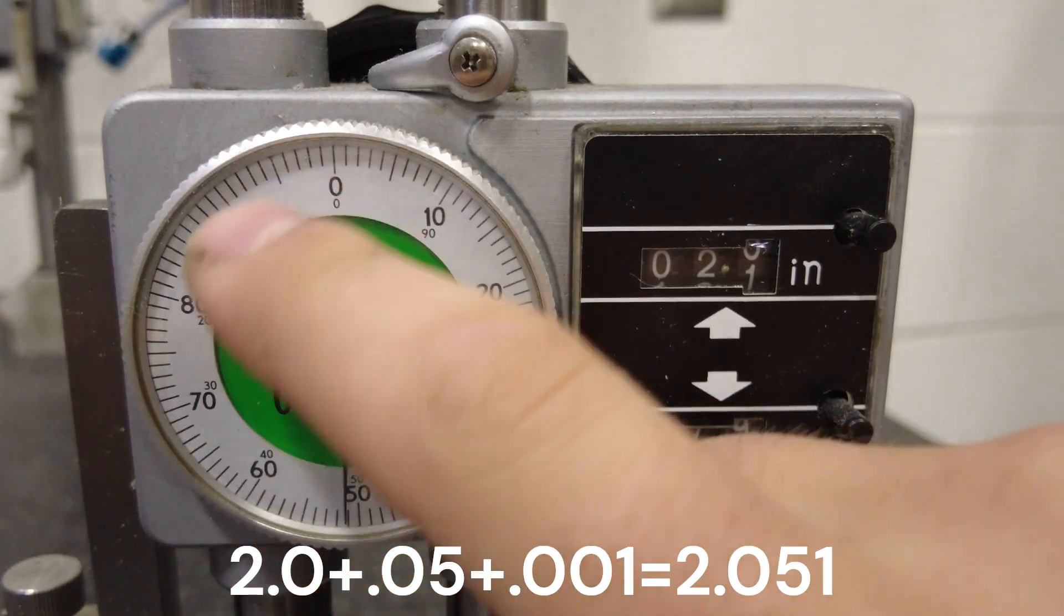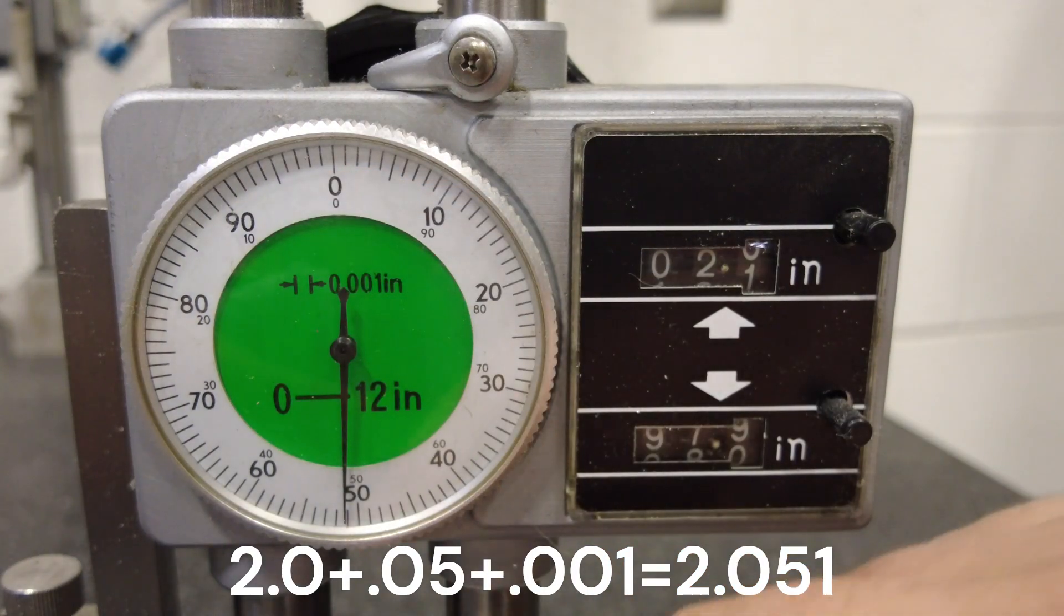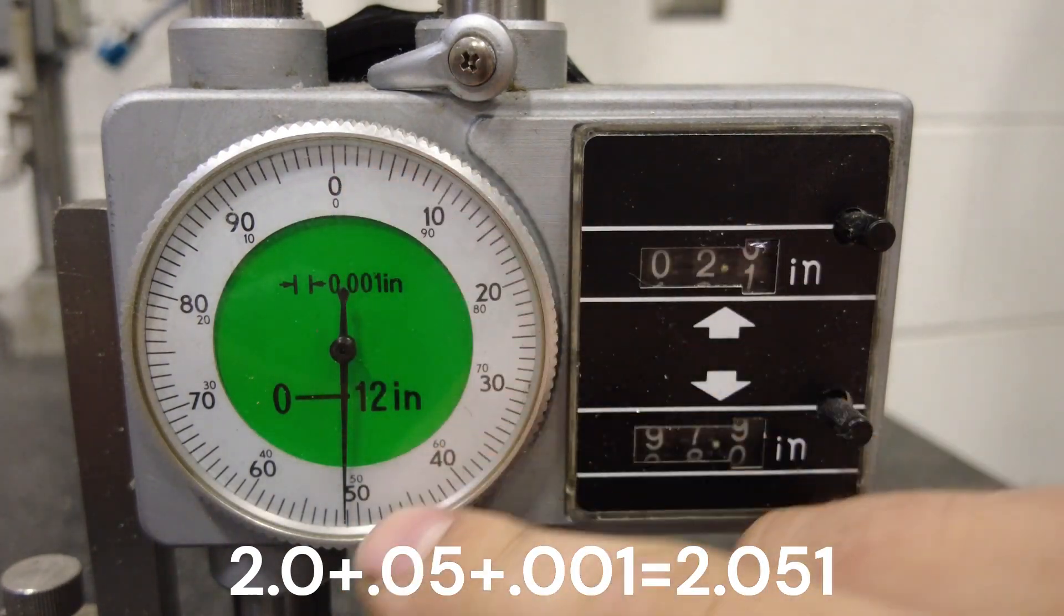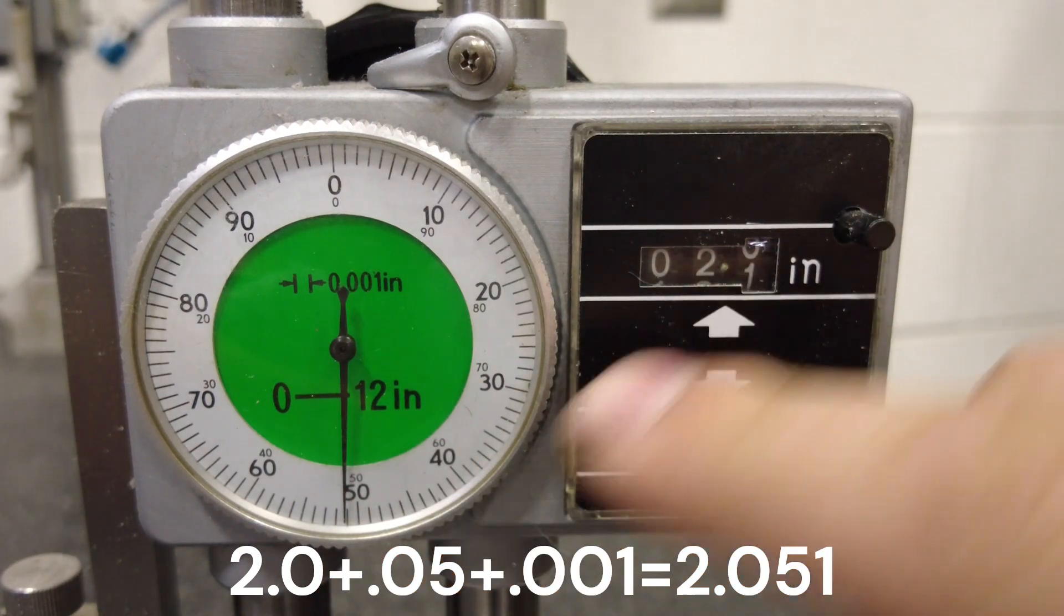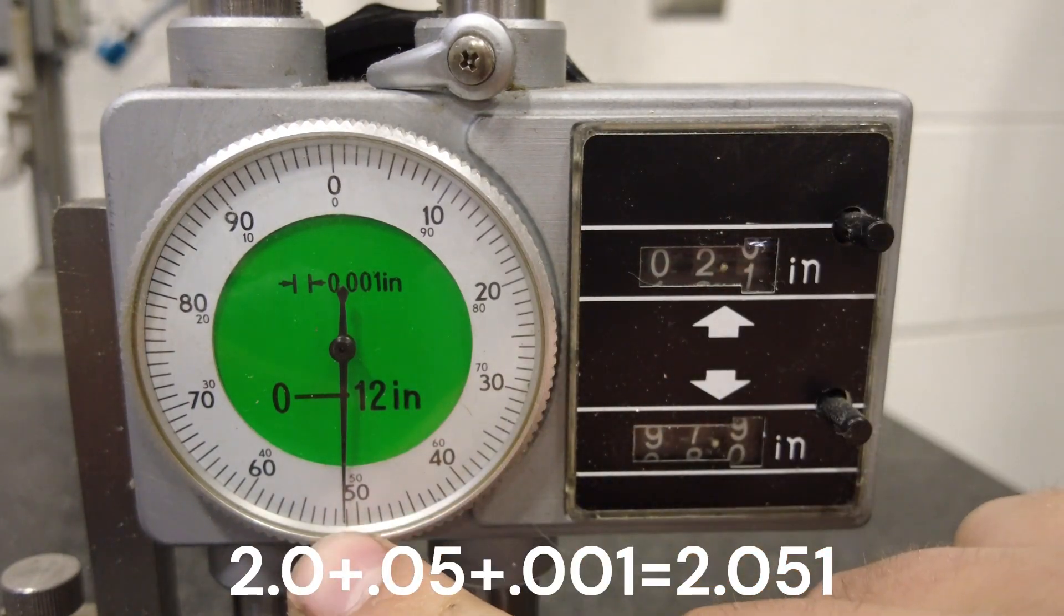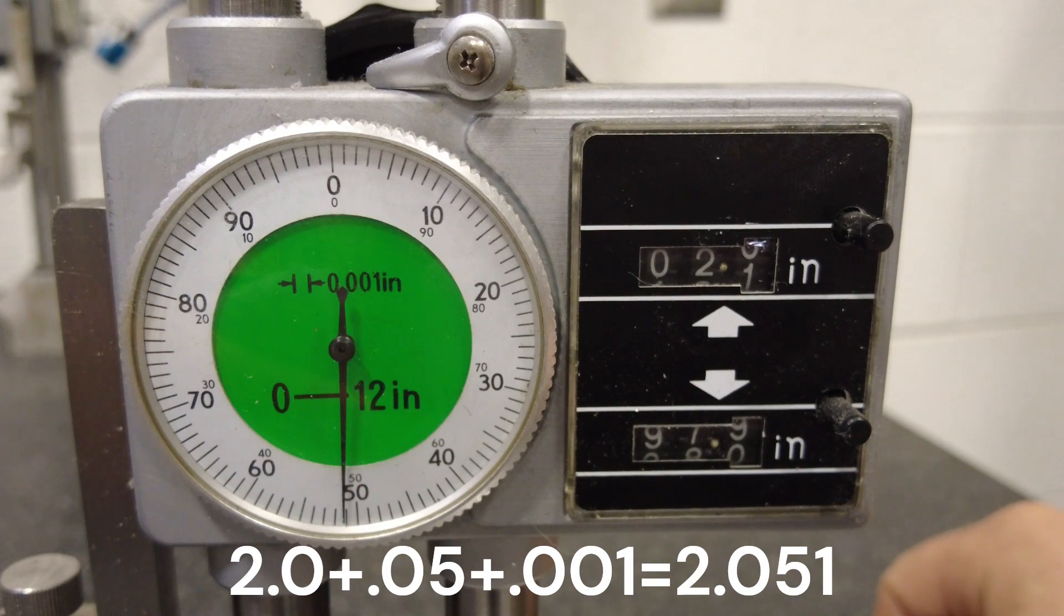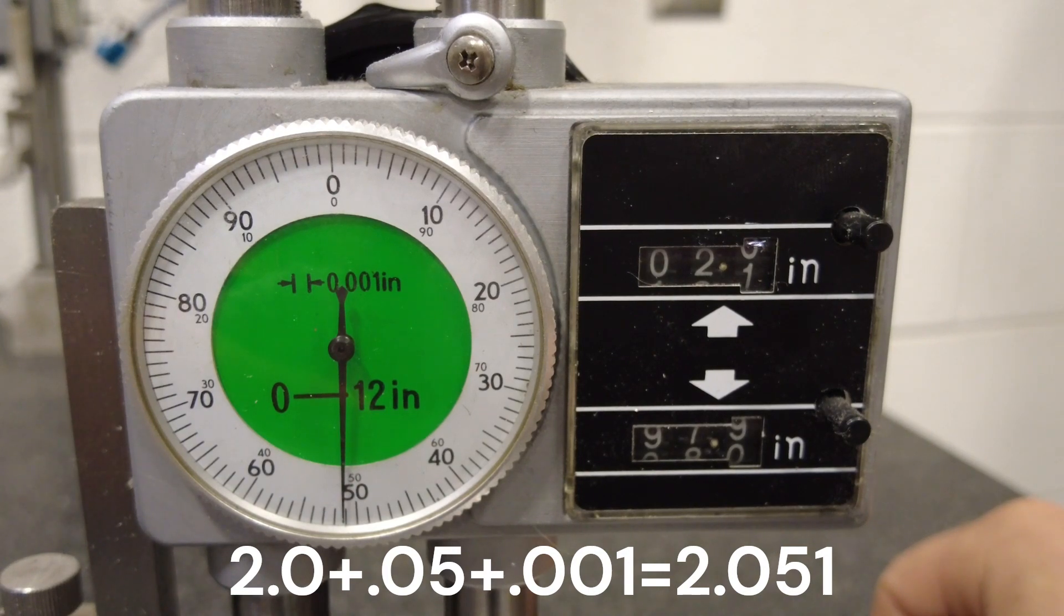This goes from 0 to 99, so we're going to have 2.05. We're adding that 50, and then we need to add our 1. So 2.051 is going to be our final reading.